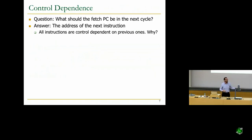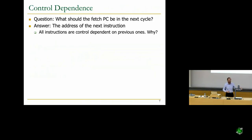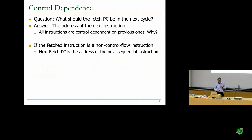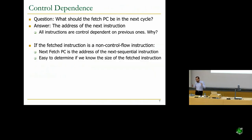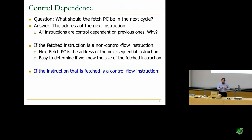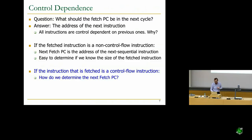All instructions are control-dependent on previous ones because we have sequential execution. If there is no branch, the next instruction should be the next sequential instruction. But if there is a branch, the next instruction may or may not be the next sequential instruction, depending on what type of branch it is. If the instruction that is fetched is a control flow instruction, then how do we determine the next fetch PC? This is the difficult problem.